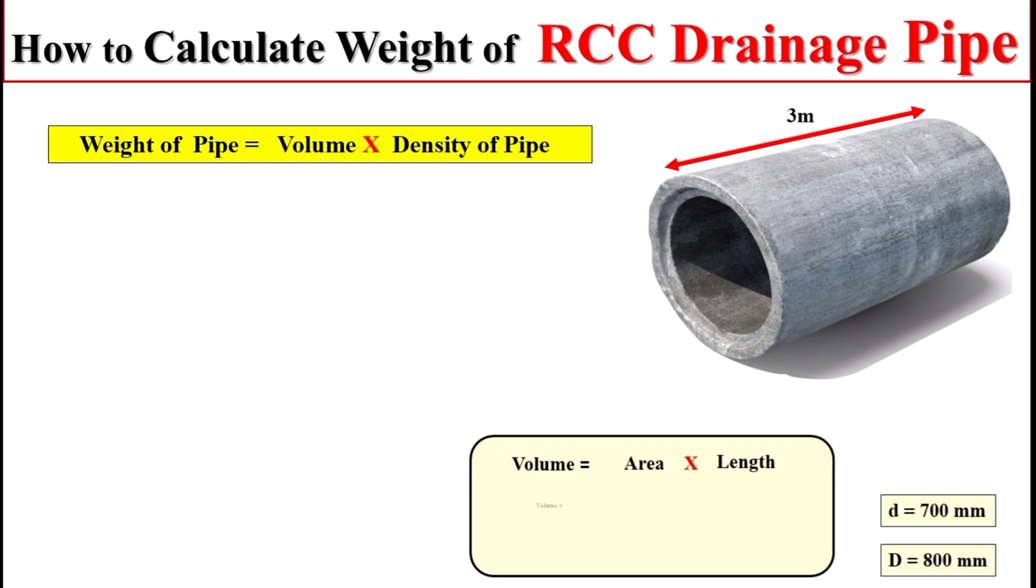Now dear students, to calculate total area for this pipe, we have a formula that is π/4 multiplied by external diameter squared minus internal diameter squared.